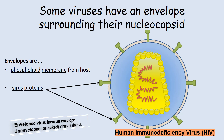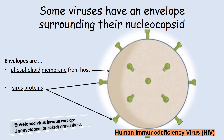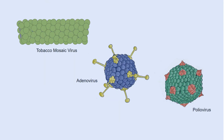HIV has two identical single-stranded RNA molecules for its genome, and it is surrounded by a conical-shaped capsid. This capsid in turn is surrounded by an envelope with protruding spike-like viral proteins embedded in the envelope. Other enveloped viruses include the Ebola virus, rabies virus, herpes virus, and the influenza virus. And as previously shown, the tobacco mosaic virus, adenovirus, and poliovirus are unenveloped and thus are also called naked viruses.